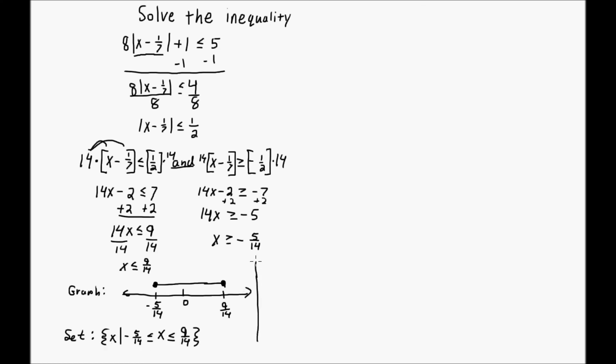Now the verbal for this. The verbal for this is quite long, as you can imagine. So it's x is less than or equal to 9 over 14, and that and came from here, and x is greater than or equal to negative 5 over 14. OK, there's your three different representations of the solution.